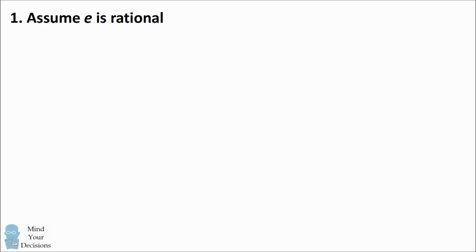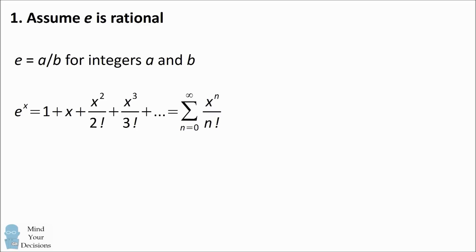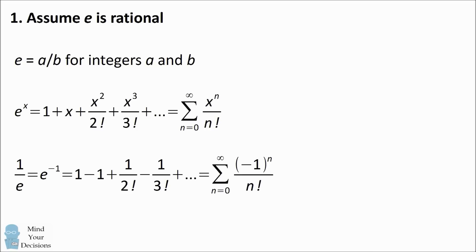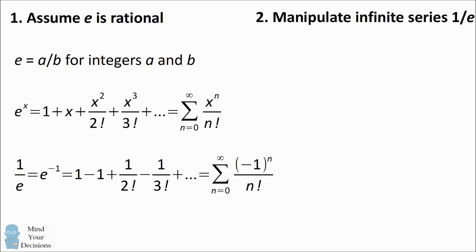Let's assume that E is rational, that it can be represented as A over B for two integers. Recall the power series is the sum of x to the n divided by n factorial. 1 over E can be found by substituting negative 1, and that'll be the alternating sum of the reciprocals of factorials. If E is rational, that means 1 over E is also rational and will equal B over A.